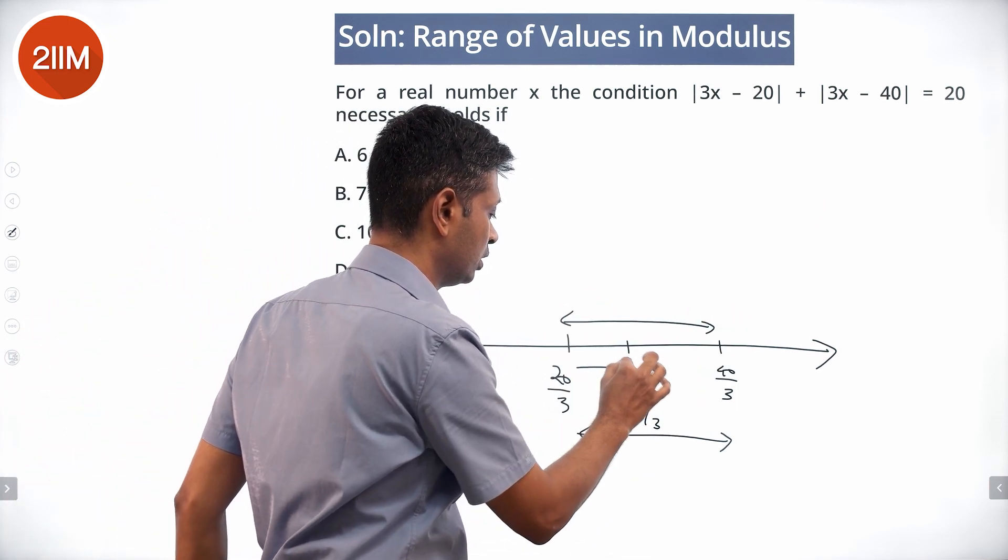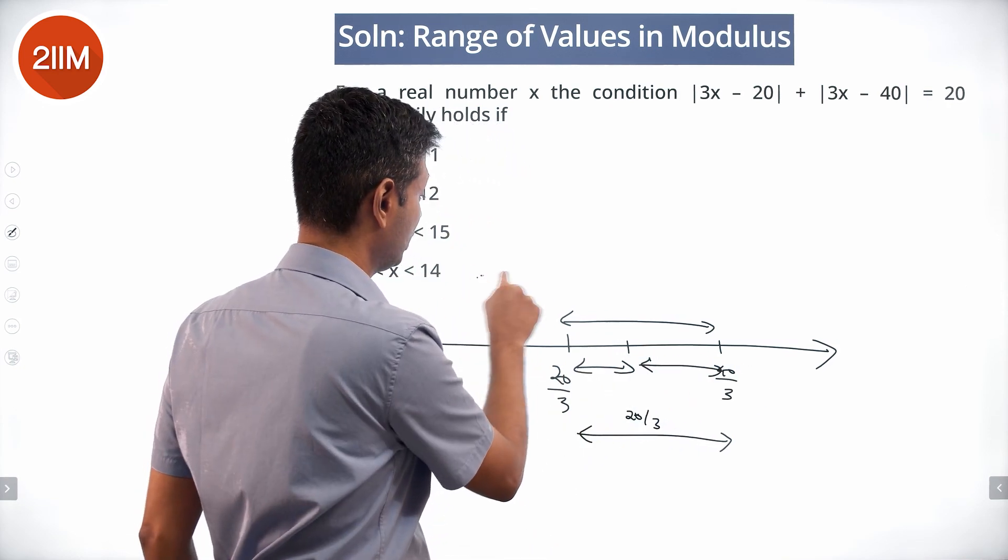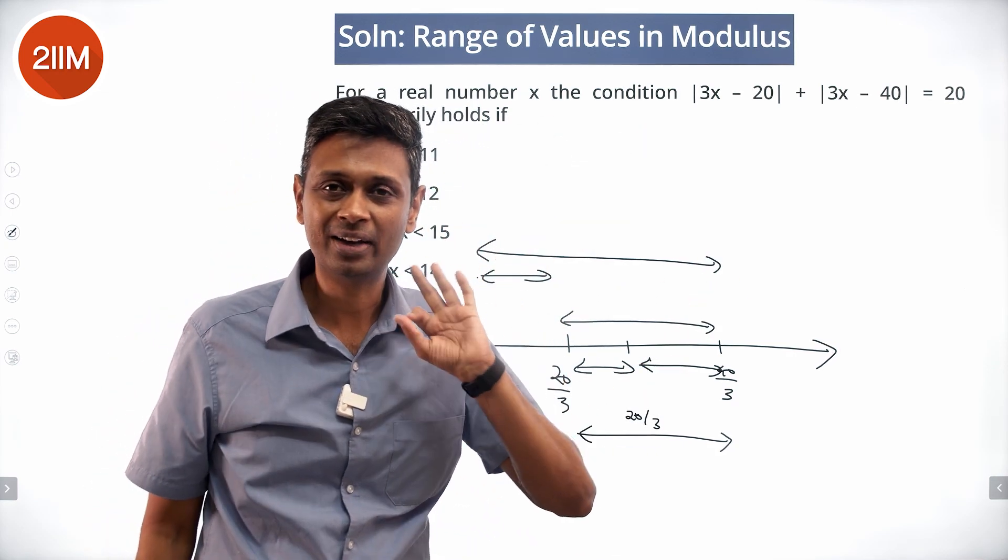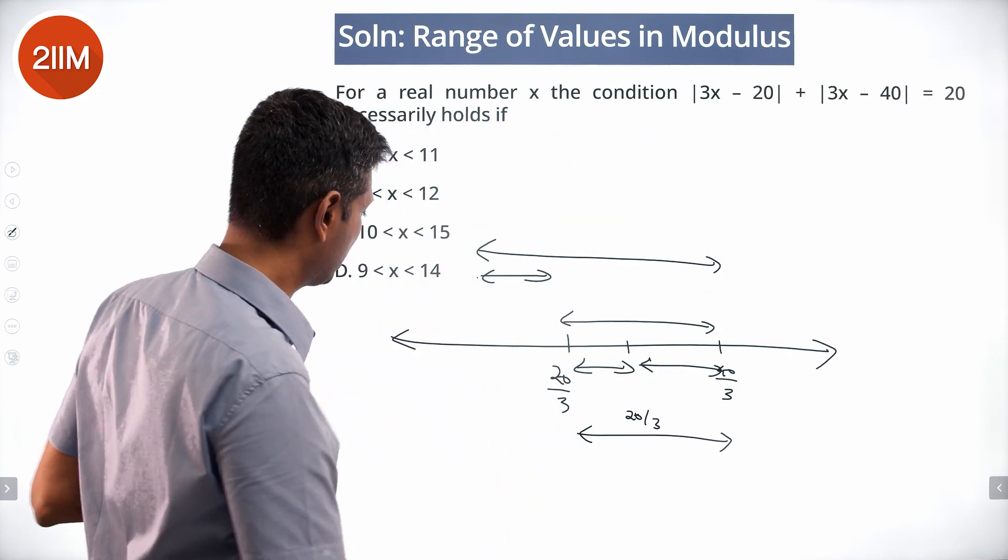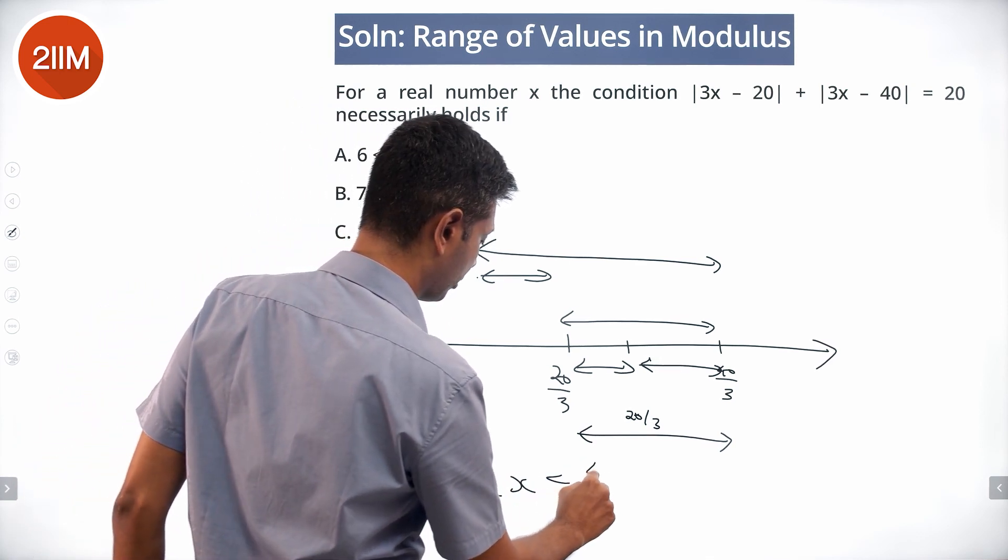If it is here, this distance plus this distance is 20 by 3. If it is here, this plus this will be way more than that.